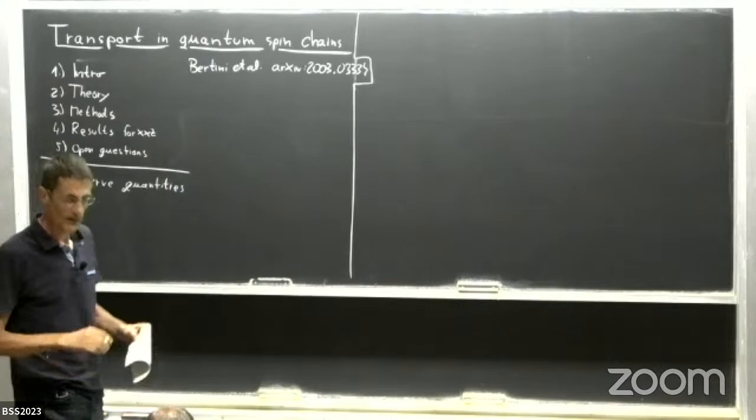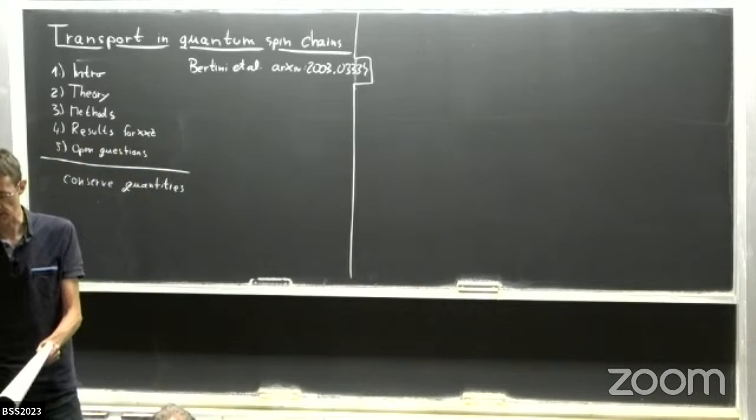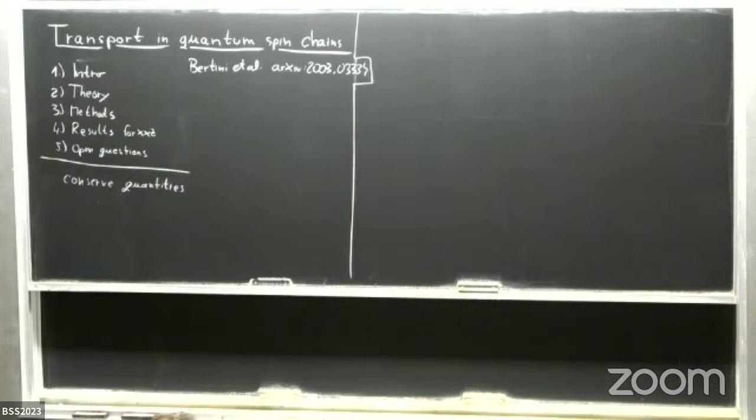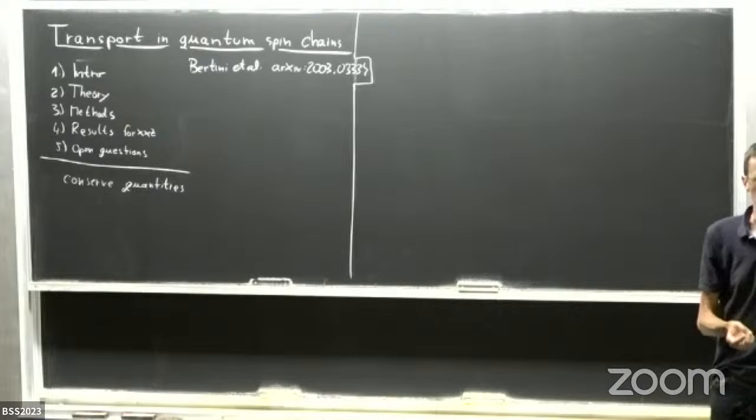What does it mean that a quantity is globally conserved? That means that if I pick a box here and carry it to the other side of the room, because the box doesn't disappear during my walking and doesn't appear out of nothing, it's conserved — I can speak about transport. If some quantity can appear out of nothing or disappear, then of course we cannot speak about transport.